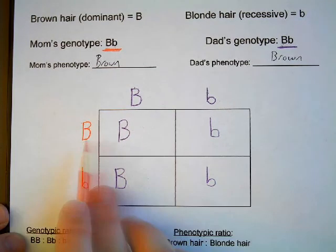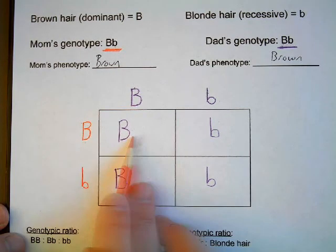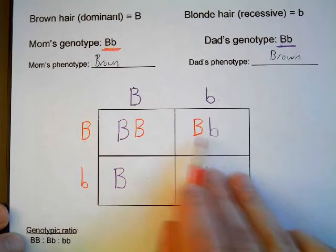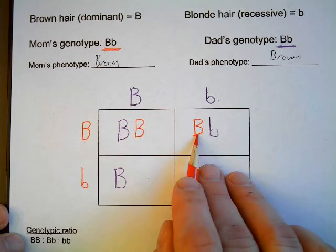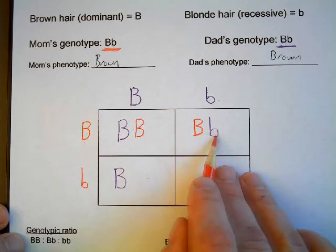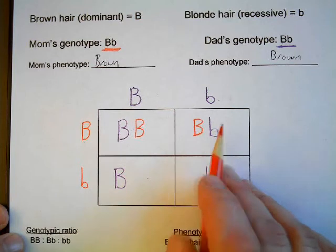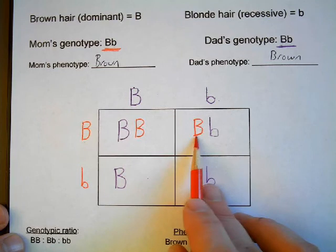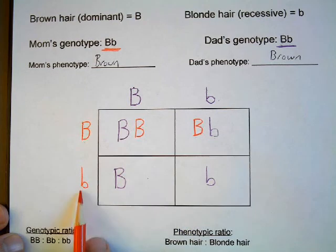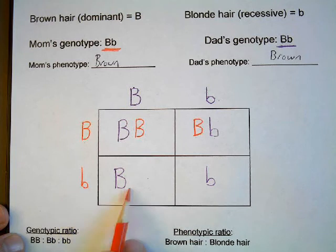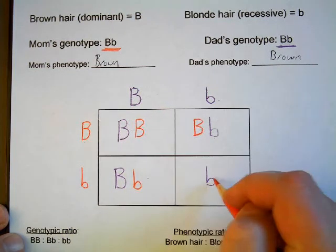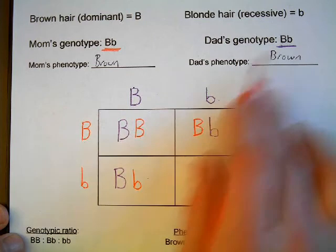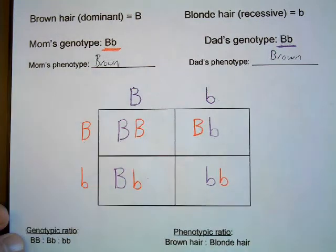Now I do the same thing with the mom, except now we're moving to the right. I take this capital B and put it into the two squares to the right. I put the capital B in front of the lowercase b, because convention has capital letters before lowercase letters — our eyes like to see capital letters before lowercase letters. Then I come down and take this lowercase b and put it into the two boxes to the right. Now I have my four possible gene combinations from the parents' original genes.